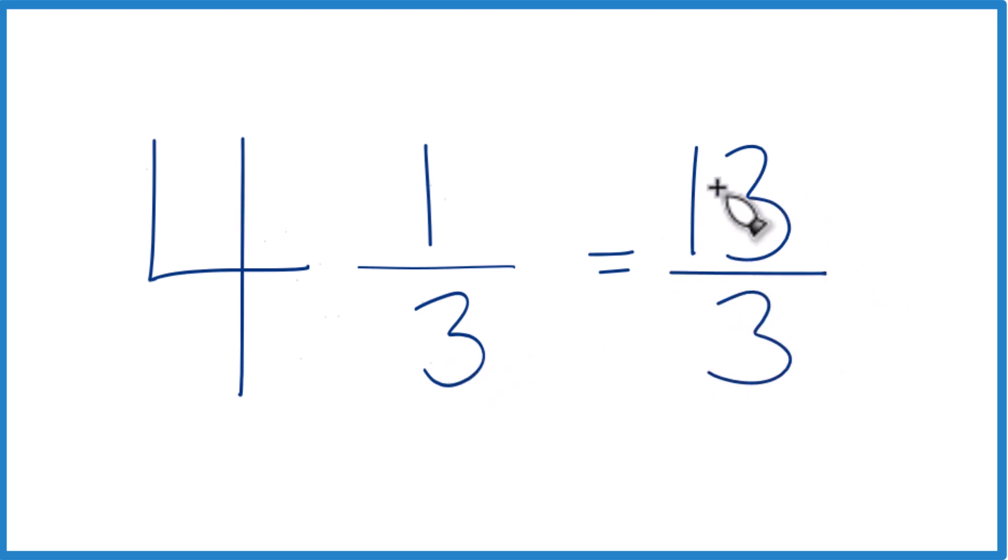And the improper fraction, 13 thirds, that's equivalent, has the same value as the mixed number 4 and 1 third. It's just a different representation.